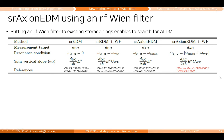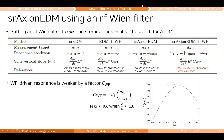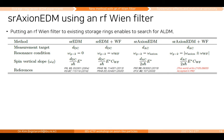Questions from other audience members? The sensitivity doesn't reach the QCD axion parameter space. Are there any factors or technical developments that could improve the situation and potentially reach the QCD axion parameter space?